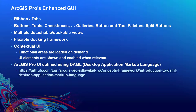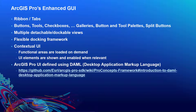Quick overview of the enhanced graphical user interface of ArcGIS Pro. We have ribbons and tabs across the top of the application. The ribbons and tabs contain plenty of buttons, tools, checkboxes, galleries, button and tool palettes, and split buttons. There are multiple detachable and dockable views with a very flexible docking framework. The UI is now contextual compared to ArcMap and ArcCatalog where everything was static — functional areas are loaded on demand and UI elements are shown and enabled whenever they are relevant. The ArcGIS Pro UI is all defined using DAML, desktop application markup language.